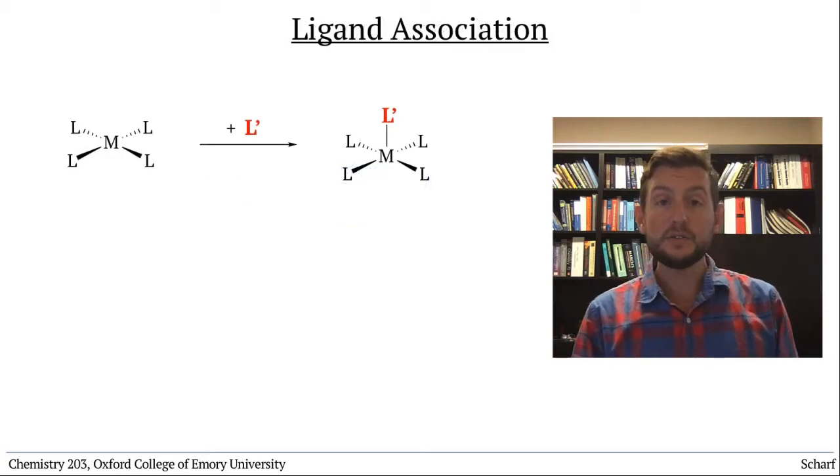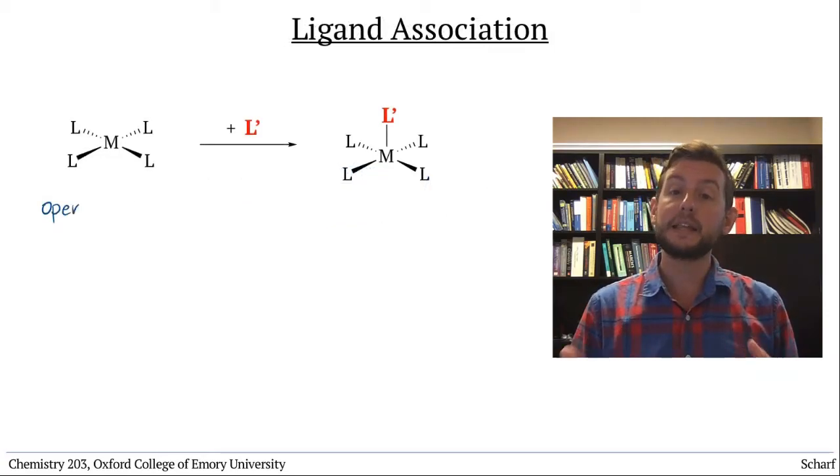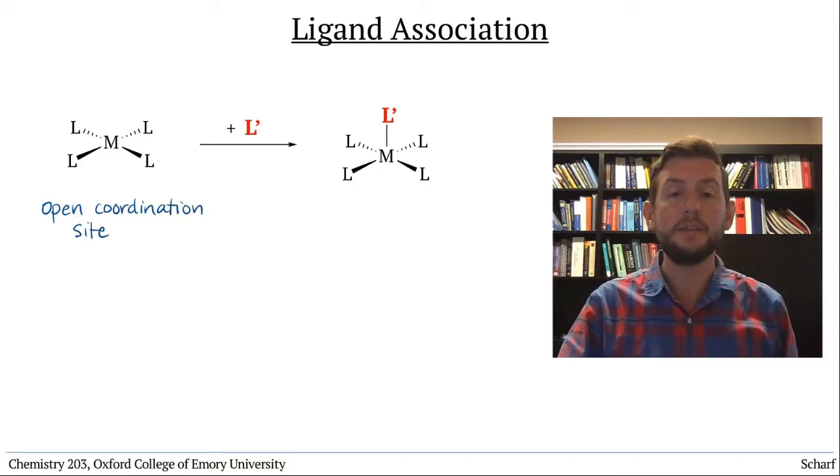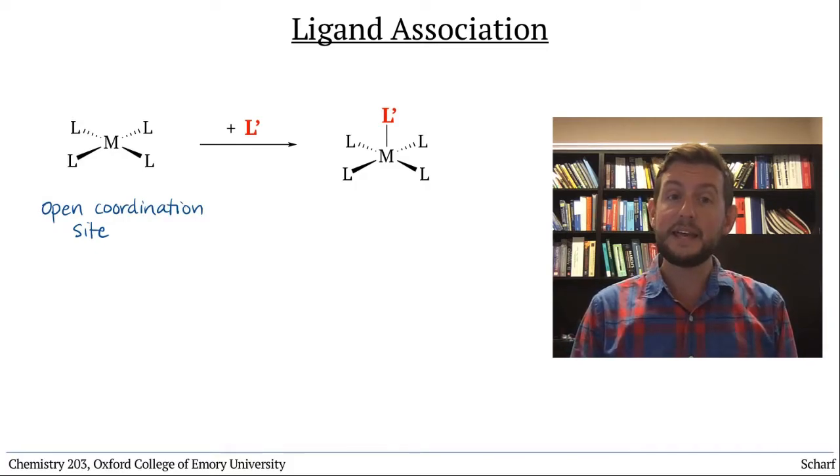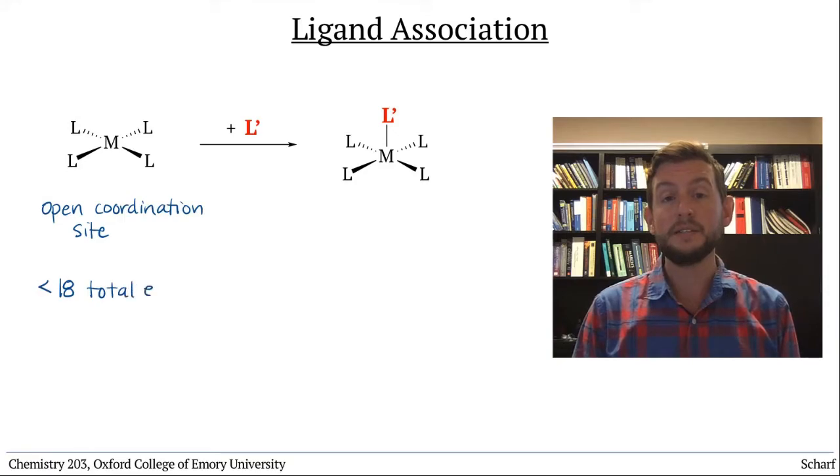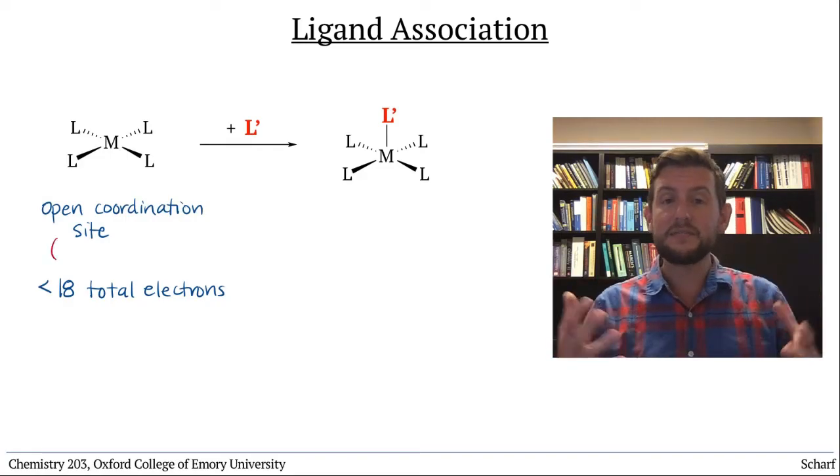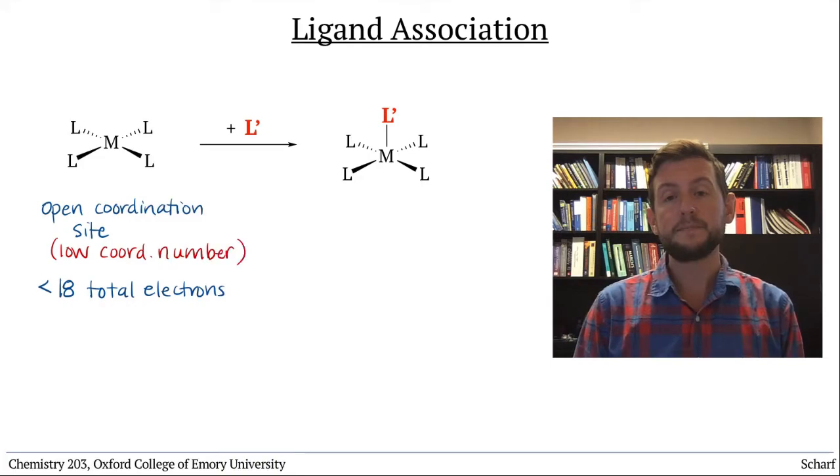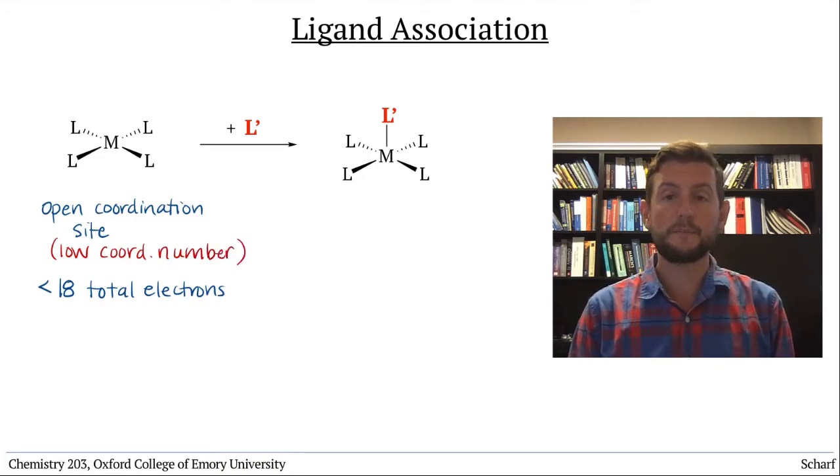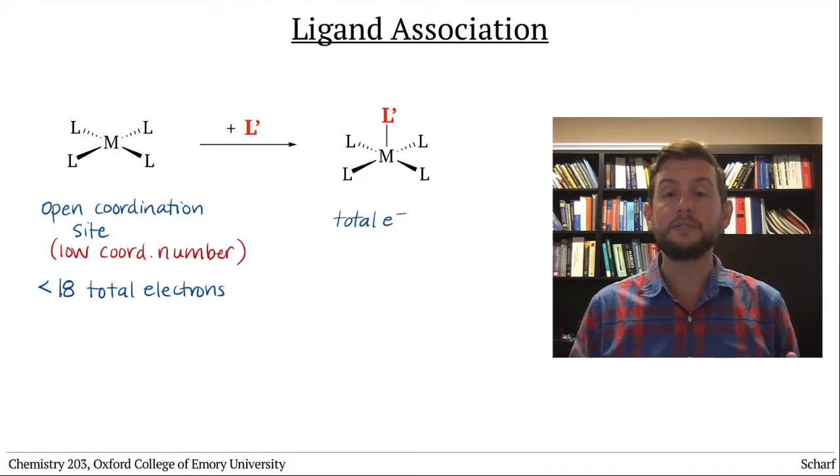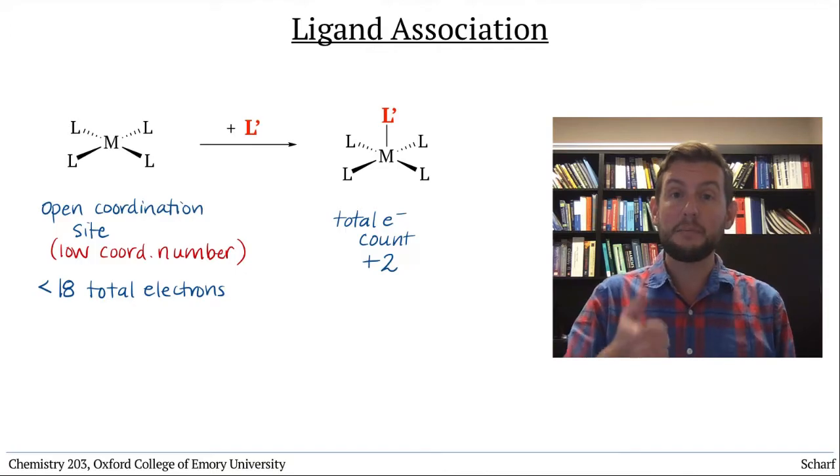Ligand association can occur whenever a metal has an available coordination site and has room in its valence orbitals to accept the additional electrons that the ligand brings with it. This means that 18 electron complexes can't undergo ligand association. The smaller the total electron count and the more space is available around the metal atom, the more likely ligand association is to occur. If a single new ligand associates, the total electron count of the complex goes up by two.